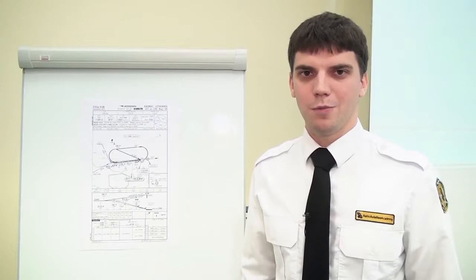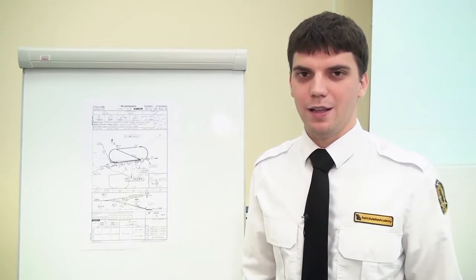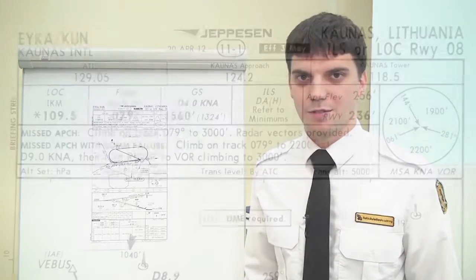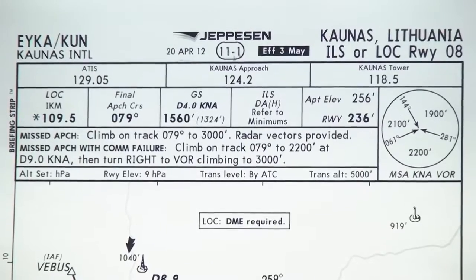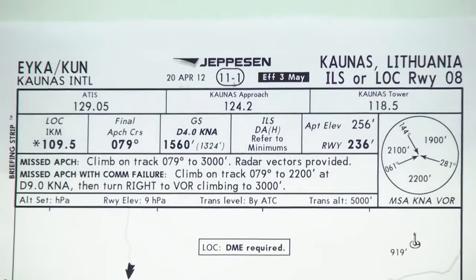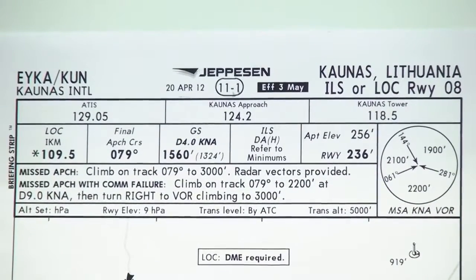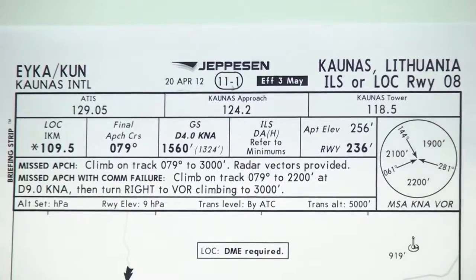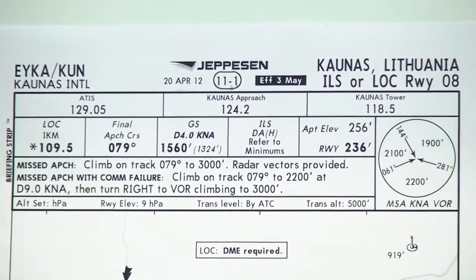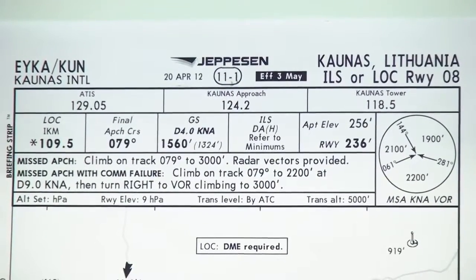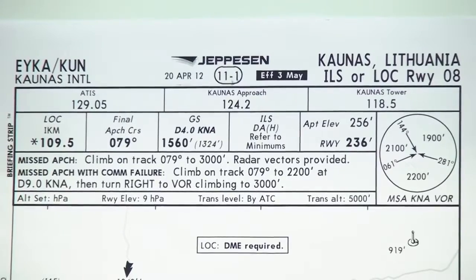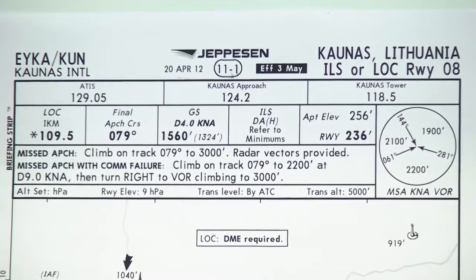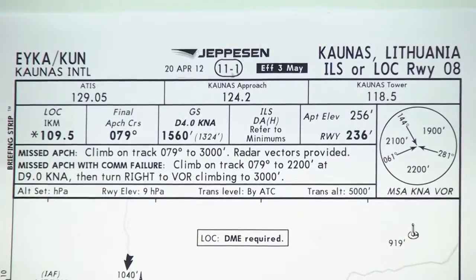Today we will be performing an ILS approach at Kaunas International Airport. First of all, we need to review the approach chart. Today we will be using a Jeppesen approach chart for Kaunas International runway 08. It is always advisable to check for the newest and latest chart so the flight will be safe and performed correctly.